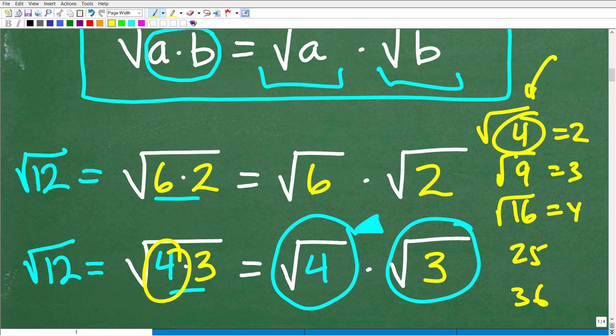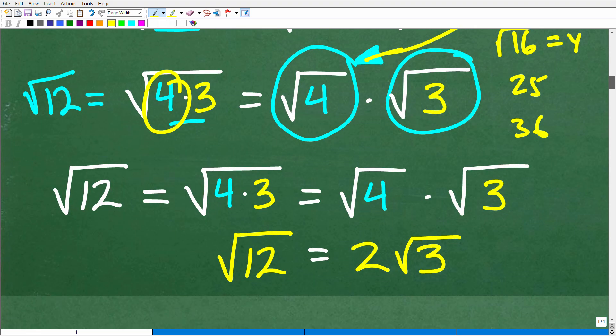So these numbers, 4, 9, 16, 25, on and on and on, these are called perfect square factors. You want to be on the lookout for those type of factors. 6 and 2 are not perfect square factors. So although this is technically correct, it's really not helping us out. So this scenario, though, is what we want. We're like, oh, we've got a perfect square factor right here. So the square root of 4 times the square root of 3, that is equal to the square root of 12. So let's go ahead and finish up the problem.